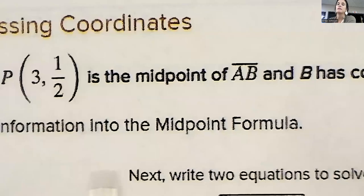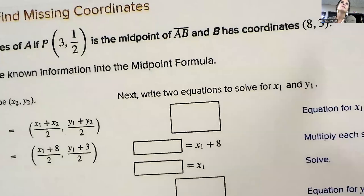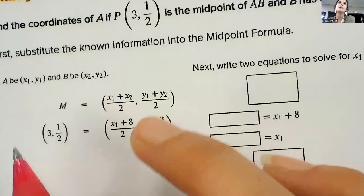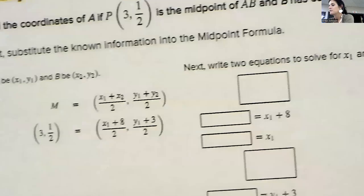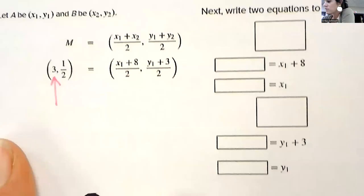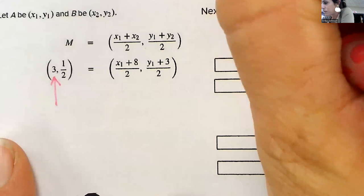We know x2. We know y2 is 8 and 3. They gave us a point. They told me B was 8, 3. So that's why the 8 and the 3 have been plugged in. They told me the midpoint is at 3 and a half. So you're going to solve for x1. Midpoint of x is 3. So you're going to have 3 equals x1 plus 8 divided by 2.